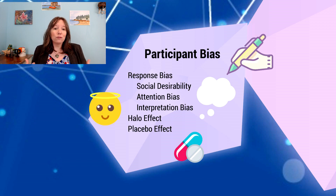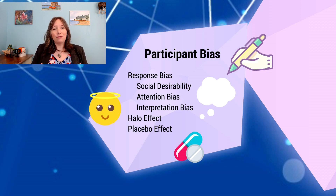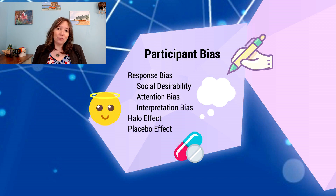This kind of over-generalization is called the halo effect — where everything is treated as really positive or really negative. The last bias I want to discuss is the placebo effect. This is what happens if we give someone a brownie and tell them there's cannabis in it, but there isn't — sometimes they will act as if they are high on cannabis anyway.